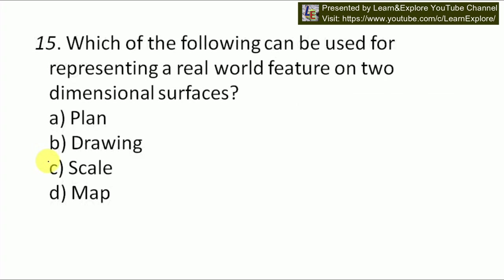Next question: which of the following can be used for representing a real world feature on a two-dimensional surface? Options are plan, plan drawing, skill, and map. Our answer will be B — map. A map can be used for representing a real world feature on a two-dimensional surface. It can help in identification of location, locating routes to a particular point, and representation can be done in various ways.